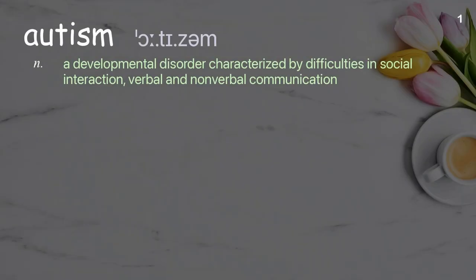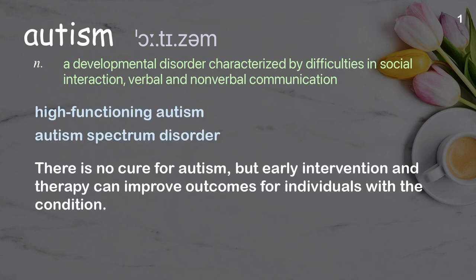Autism: A developmental disorder characterized by difficulties in social interaction, verbal, and nonverbal communication. Examples: High-functioning autism, Autism Spectrum Disorder. There is no cure for autism, but early intervention and therapy can improve outcomes for individuals with the condition.